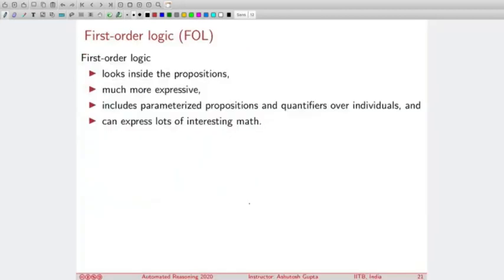Now let's look at a slightly more complicated class of logic called first-order logic. In first-order logic, you now start looking inside the propositions, not arbitrarily in detail but somewhat in detail. It's far more expressive. It includes parameterized propositions, and you can quantify over individuals. This restriction is important—the quantification is not arbitrary; you can only quantify over individuals. Since you have added extra power, you can now express a lot of interesting math in this logic.